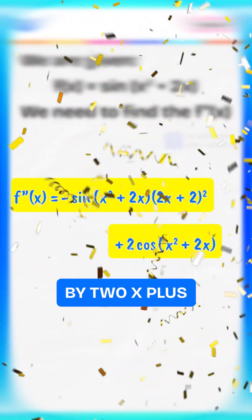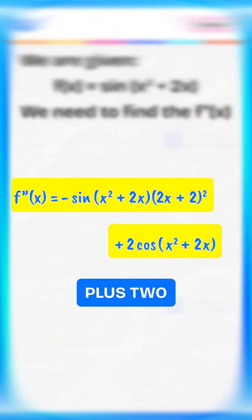So f double dash of x equals minus sine of x squared plus 2x, multiply by 2x plus 2 squared, plus 2, cosine of x squared plus 2x.